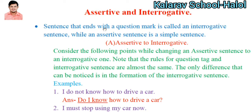Assertive and interrogative sentence. A sentence that ends with a question mark is called an interrogative sentence — it is a question type of sentence. And assertive sentence is a simple sentence, or common sentence. Interrogative sentence means a question type of sentence.